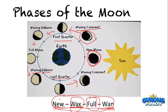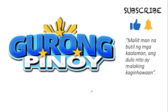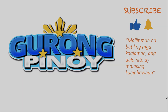Just remember the four terms taught today: waxing, waning, crescent, and gibbous. That ends our discussion. I hope you've learned the different types of eclipses — solar and lunar — and the different phases of the moon. Please don't forget to subscribe, like our video, and hit the bell button so you'll be notified of our next videos. Maraming salamat at hanggang sa muli, mga guro.